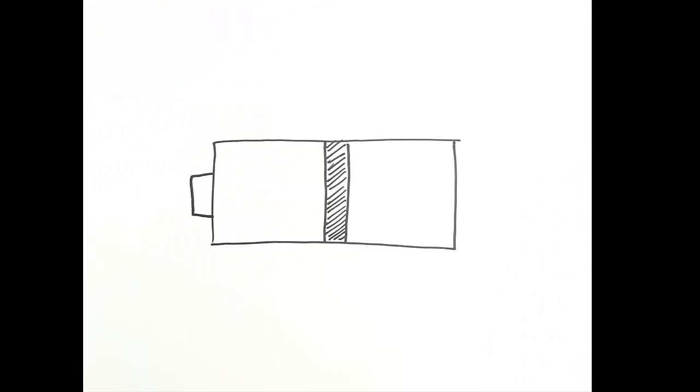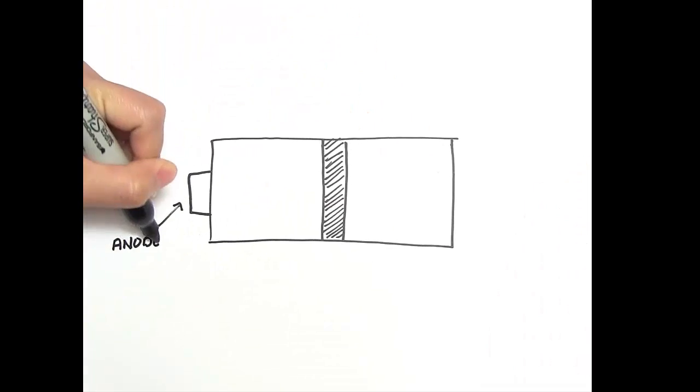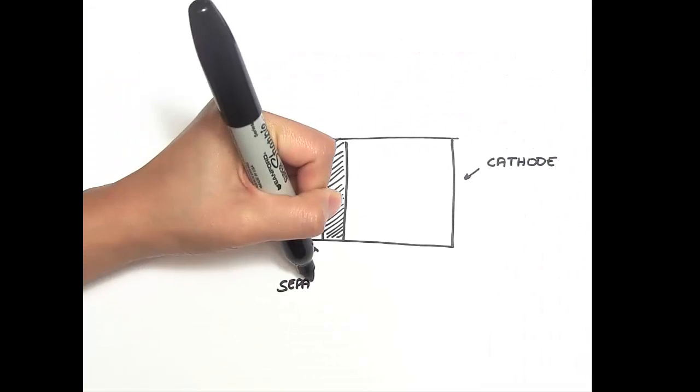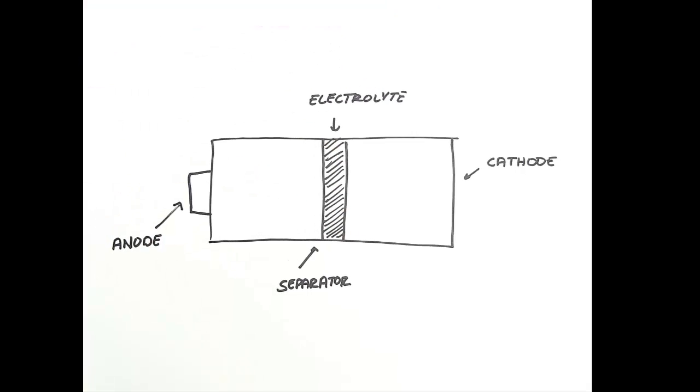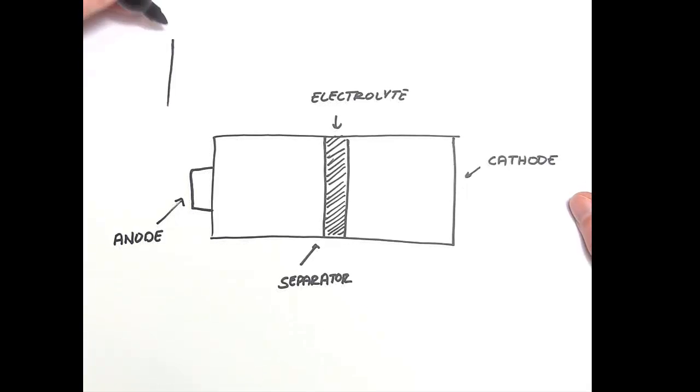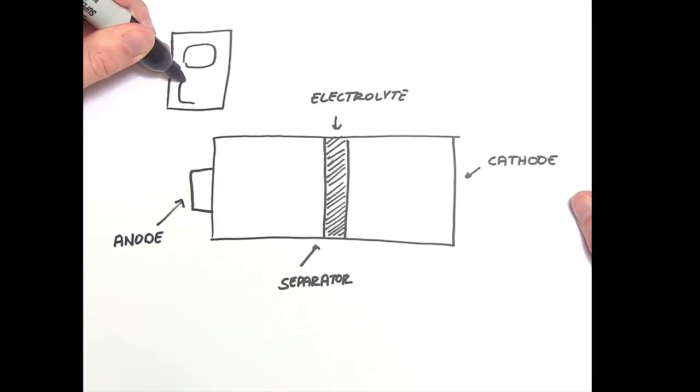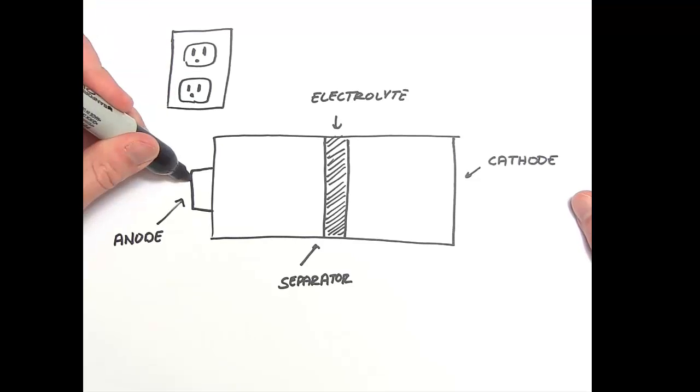But all batteries have four basic parts. An anode, a cathode, electrolyte, and a separator. By themselves, these four parts don't do anything. They're just sitting there. It's not until you connect the two ends of the battery making a circuit that any chemistry starts happening.